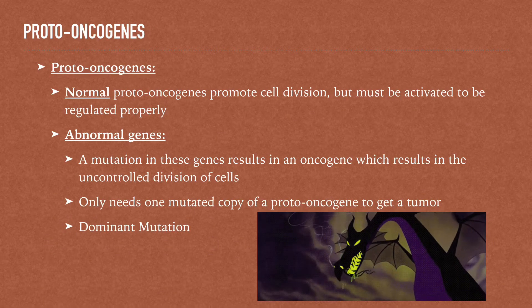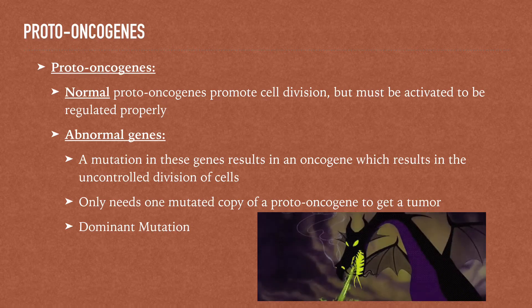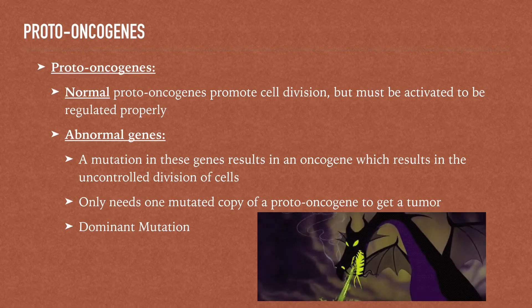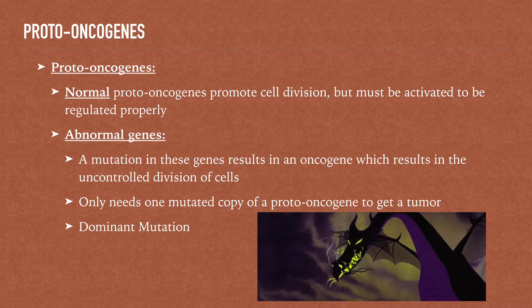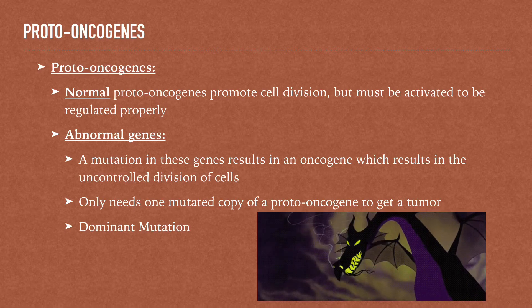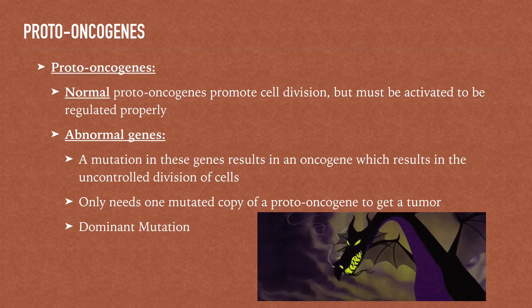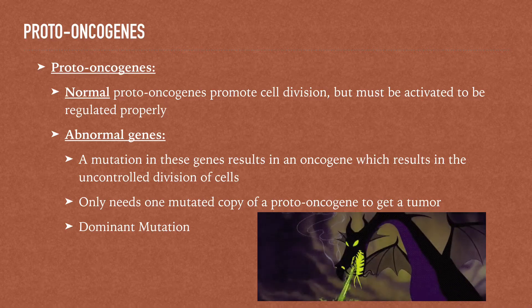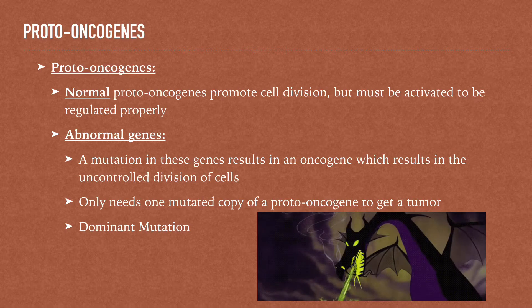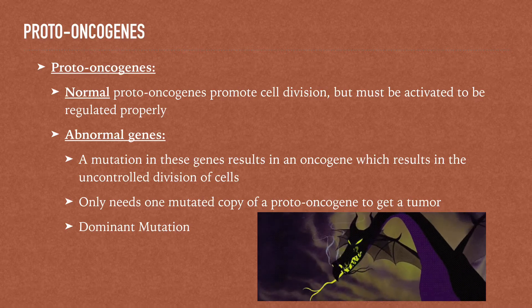A normal proto-oncogene promotes cell division but must be activated to be regulated properly. A mutation in these genes results in an oncogene, which then causes uncontrolled division of the cells. You only need one mutated copy of the proto-oncogene to get a tumor, making it a dominant mutation that overshadows the other allele.